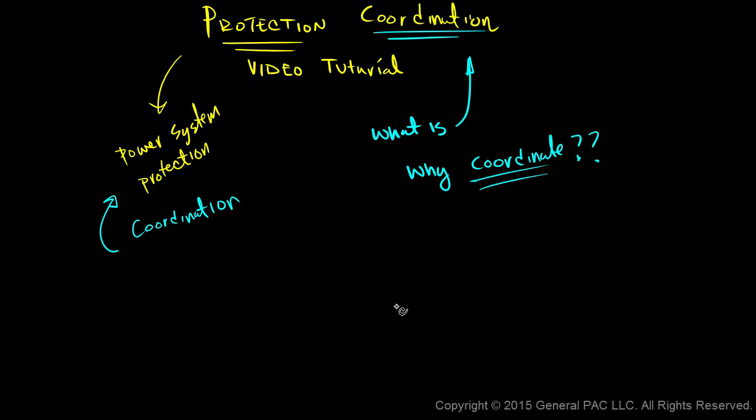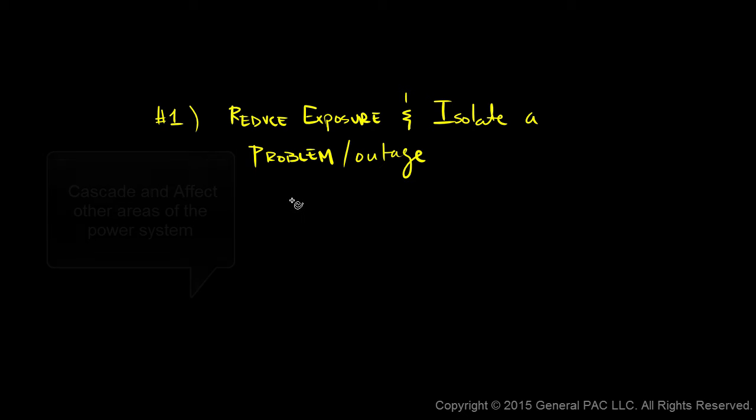So let's forget all the fancy terms and talk about what we want plainly. So what we want is number one, reduce exposure and isolate a problem or an outage. This is pretty simple to grasp. We don't want the outage to cascade.